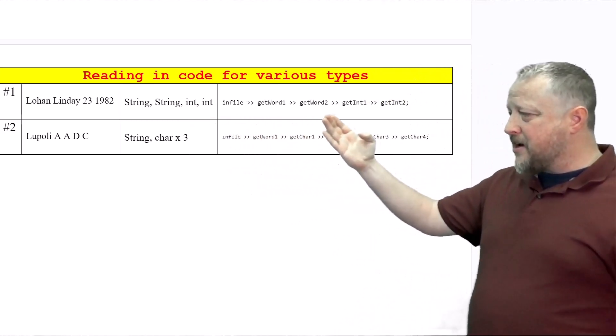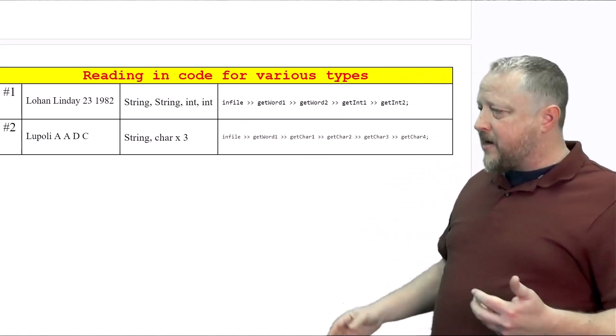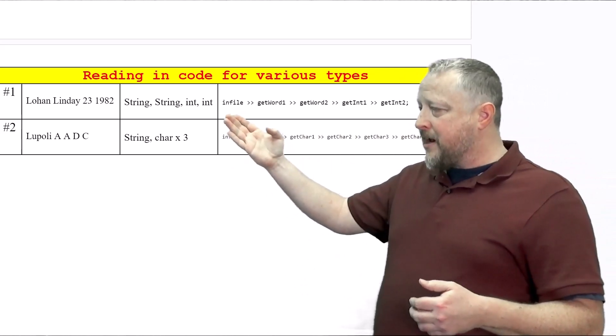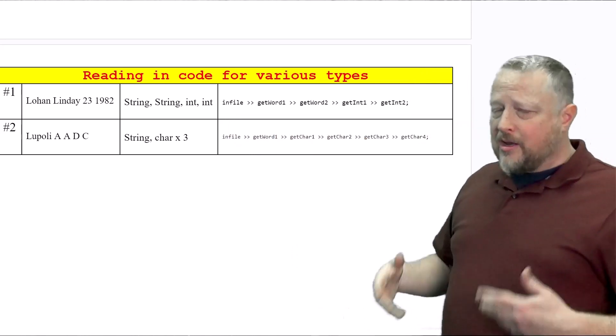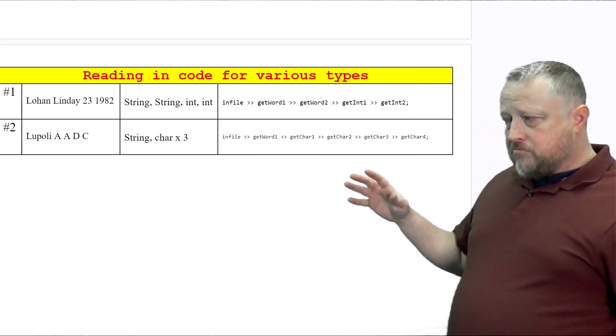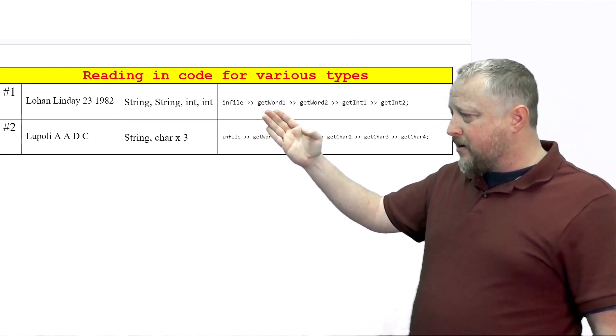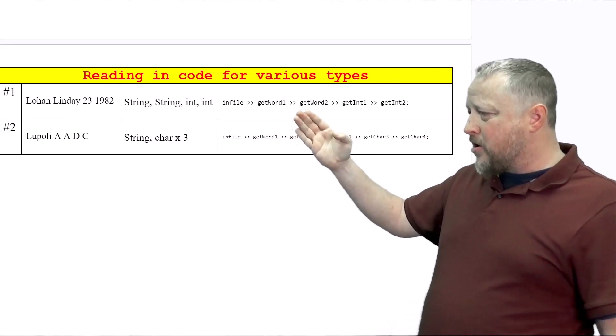The infile for that, because we're all reading in individual pieces of data, I can get away with that infile and then those collection brackets basically just like a CN. Pretty nice and easy. Again, the order's important. The first one's going to get, I guess I named it Get Word.